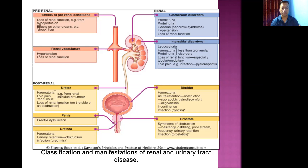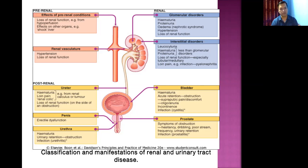Post-renal diseases involve conditions occurring beyond the kidney — such as ureter disease, bladder diseases, penile or urethral disorders (in males), and prostate disorders. If the ureter is affected, the patient typically has loin pain that moves from loin to groin, which is very typical of ureteric colic. The same patient may also have hematuria.